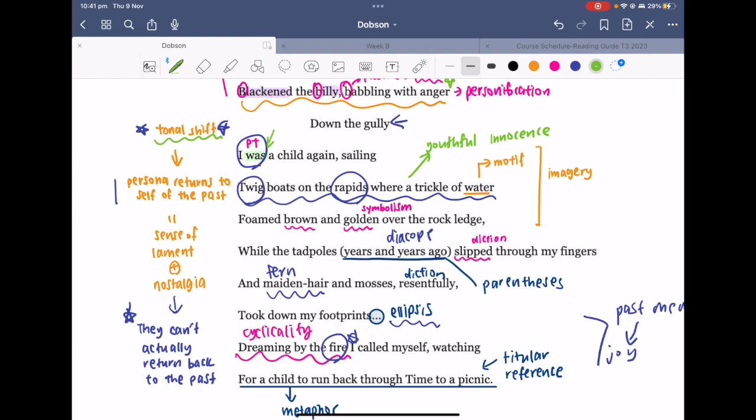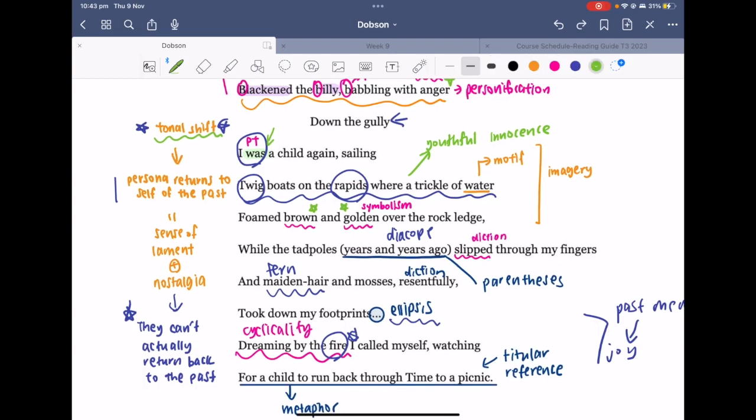You could also make note of how Dobson makes use of the color symbolism of brown and golden, which strays away from the bitterness that the persona associated autumn with at the beginning. But I feel like the persona is not necessarily enjoying herself fully at this point in time as we are reminded of the inevitable passage of time where the young persona is thrust into a new stage of life. See how there is a tension created between this idea of twig boats and rapids.